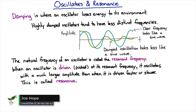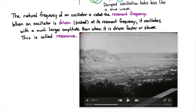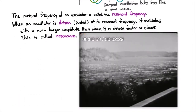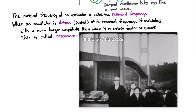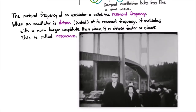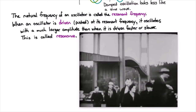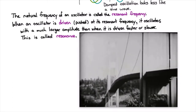So why is it important to build some things that are highly damped? Well, it's not always true that you want things to oscillate. In the 1940s, on a particular windy day, there was a suspension bridge at Tacoma Narrows that was unfortunately driven rather hard by the wind. Now, the wind wasn't pulsing, so it wasn't like a child being pushed on a swing.